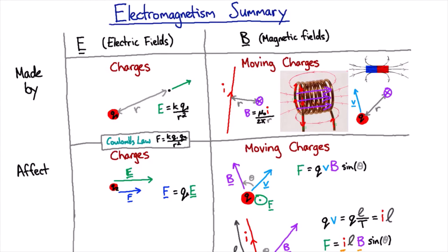So we should adjust our summary here. We know that electric fields are made by charges and changing B fields.